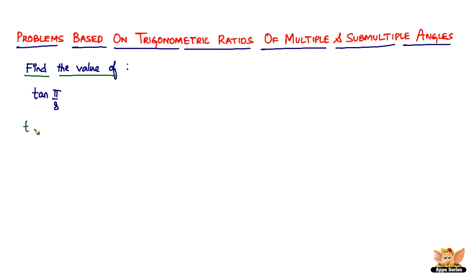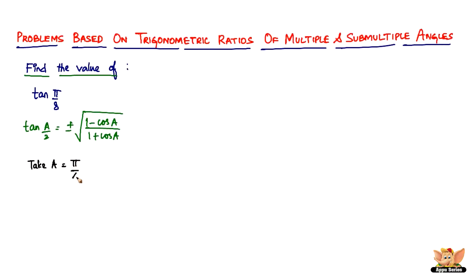To solve this, go back to the formula for tan(a/2), which is equal to plus or minus the square root of (1 minus cos a) divided by (1 plus cos a). Now we need to take a equal to π/4 to make the angle π/8. So when a = π/4, this becomes tan(π/8).